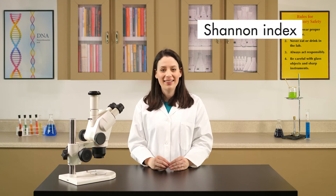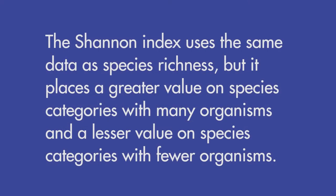To indicate both how many species categories exist in a community and how those organisms are distributed within it, ecologists use the Shannon Index. The Shannon Index uses the same data as species richness but is calculated differently. It places a greater value on species categories with many organisms and a lesser value on categories with fewer organisms. The Shannon Index ranges from 0 to 7.